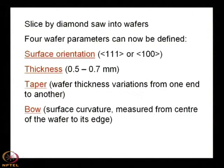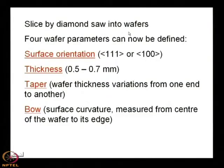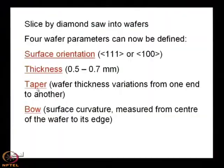The third parameter is taper — the wafer thickness variation from one end to another. Even with computer-controlled machines, there can be a thickness variation at the micron level, say 1 or 2 microns, as you go from one end to the other.